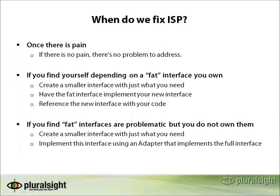When should we fix ISP violations? Like most principles, only address them if there's pain. If there's no problem, keep adding features and value. If you depend on a fat interface you own and it's causing issues, create a smaller interface with just what the client needs, have the fat interface implement it, and reference the new interface in your client. If the fat interface isn't yours — like the ASP.NET MembershipProvider — create a smaller interface with what you need and implement it using an adapter that wraps the full third-party interface.